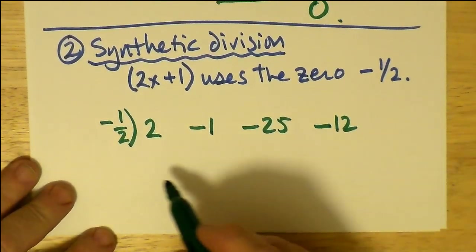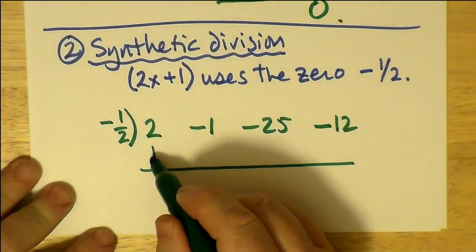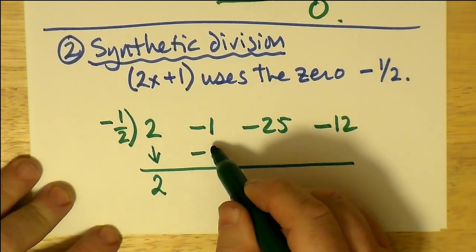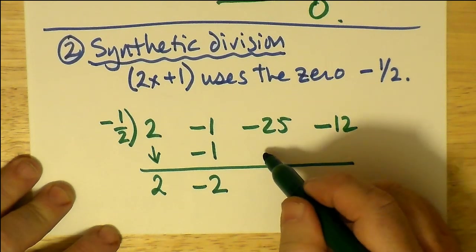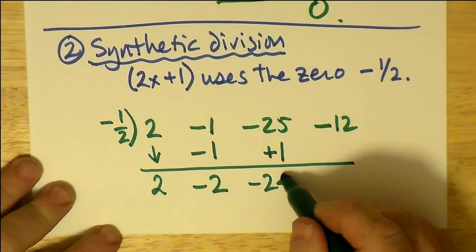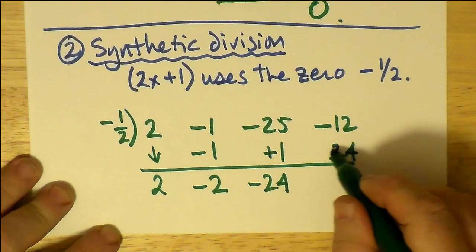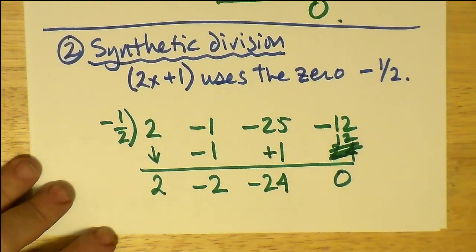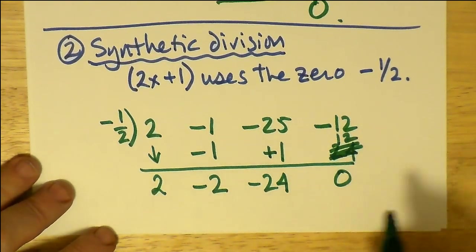Let's write out the coefficients: 2x³ - x² - 25x - 12, all written with their coefficients only. We bring down the 2, multiply it by -1/2 to get -1, add that to -1 to get -2. Dividing by -1/2, we get +1, and that makes -24, which is divisible by -1/2 to make +12. Add those together to get 0, same as subtraction.